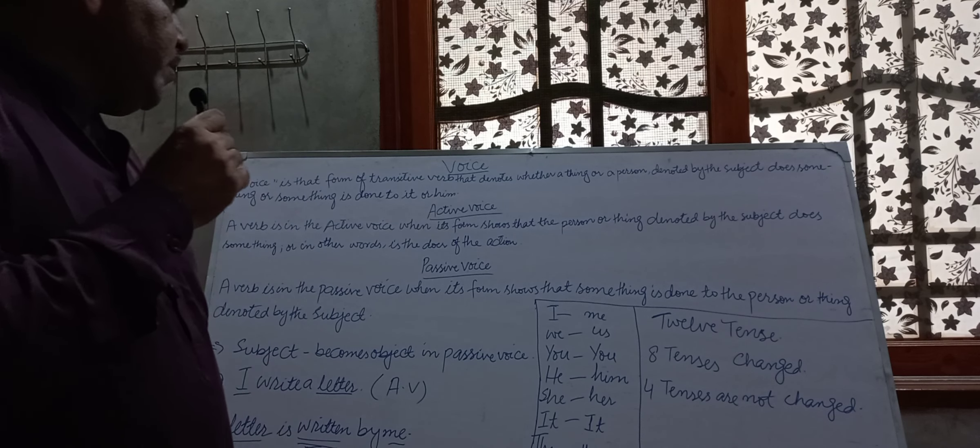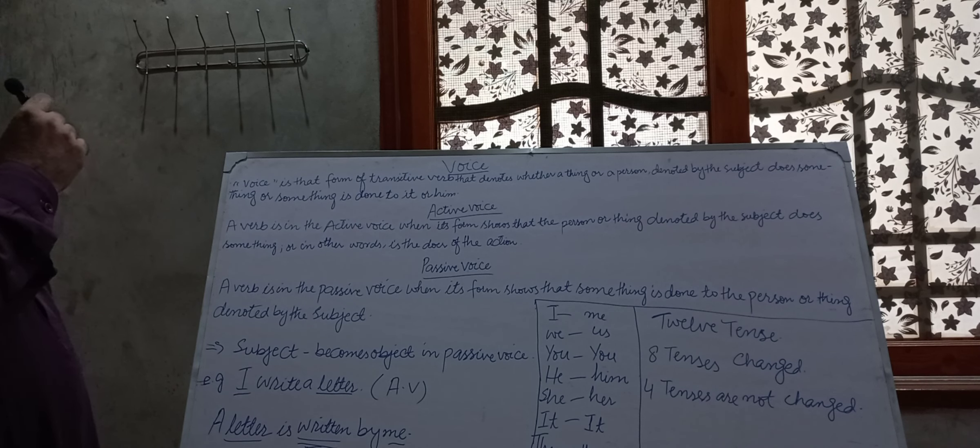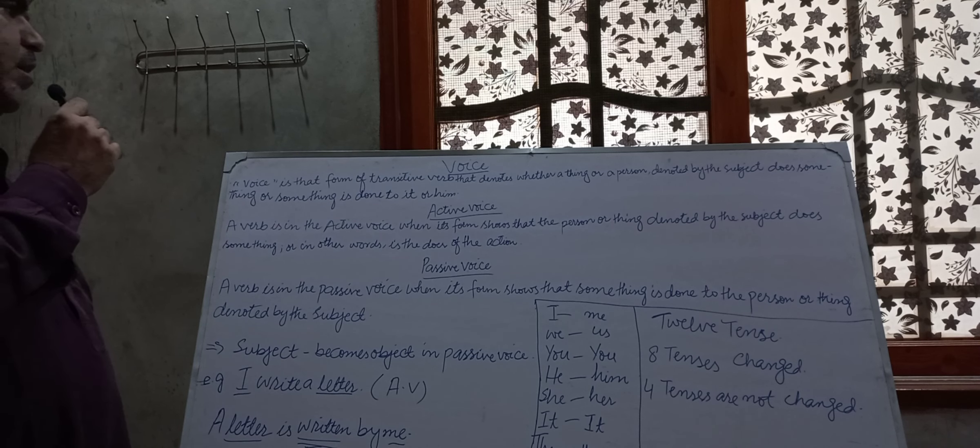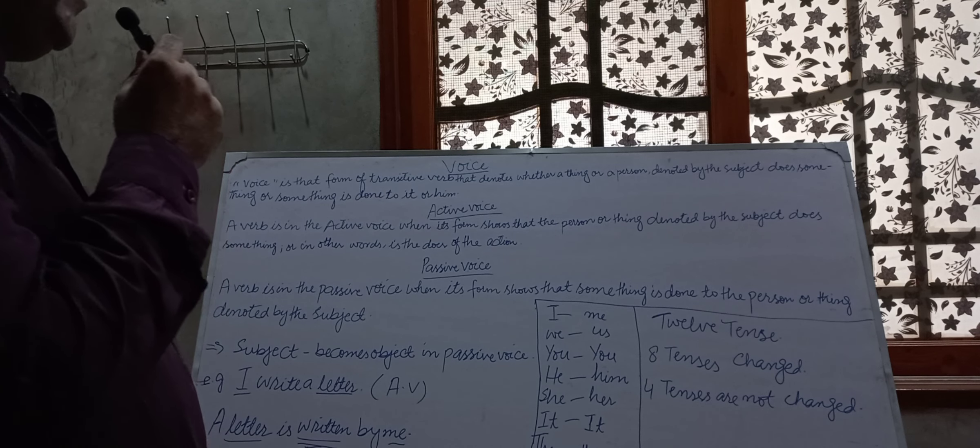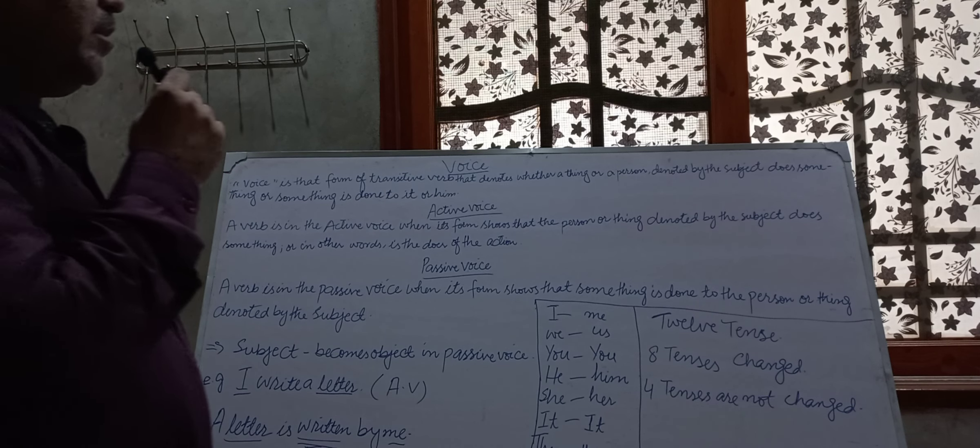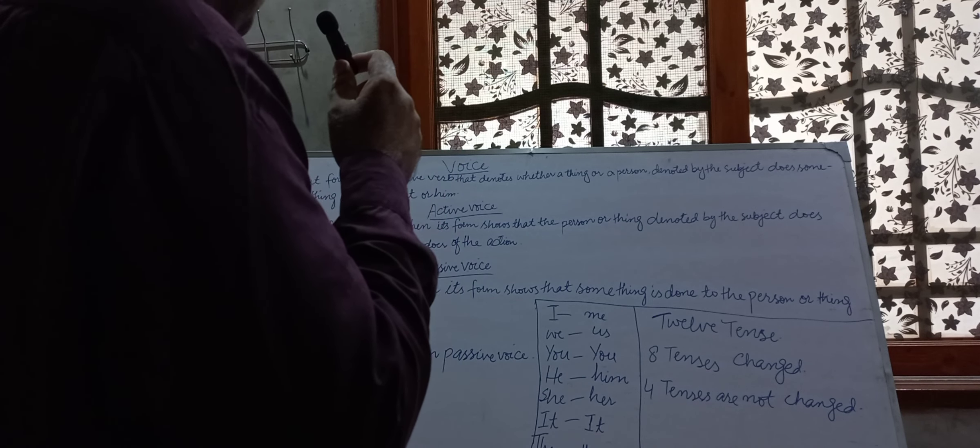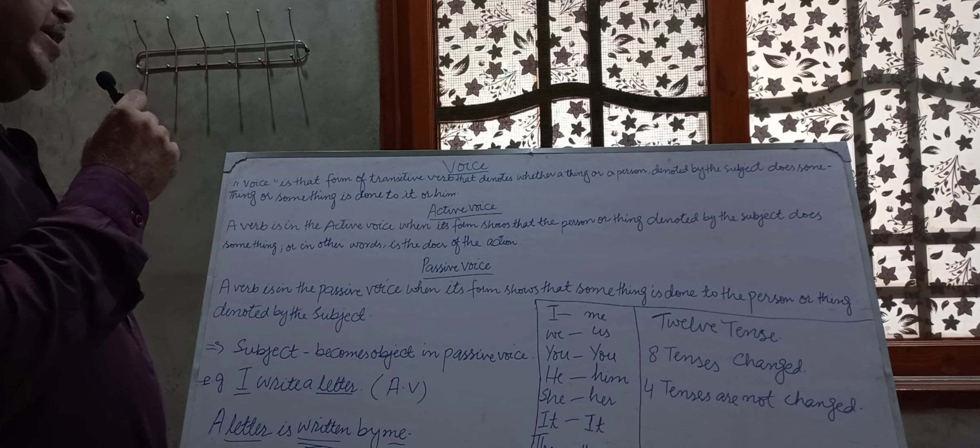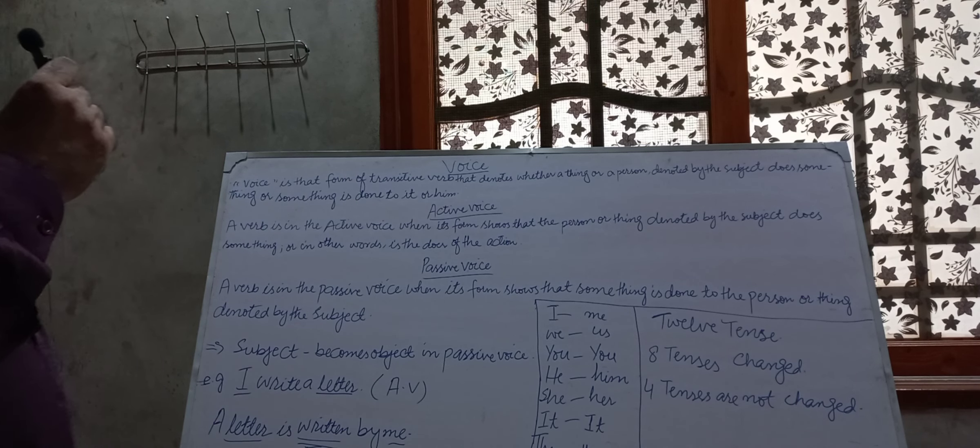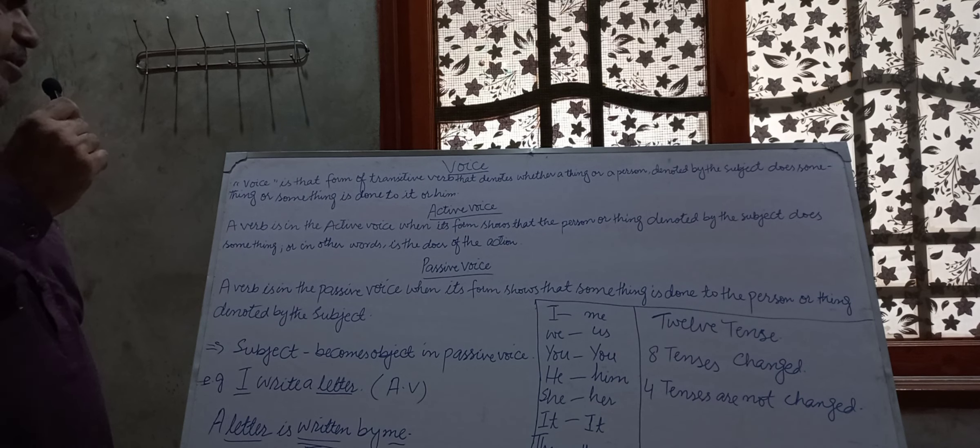Let's start. Voice. What is voice? Voice is that form of transitive verb that denotes whether a thing or a person denoted by the subject does something or something is done to it or him. That is called voice. There are two kinds of voice: active voice and passive voice.